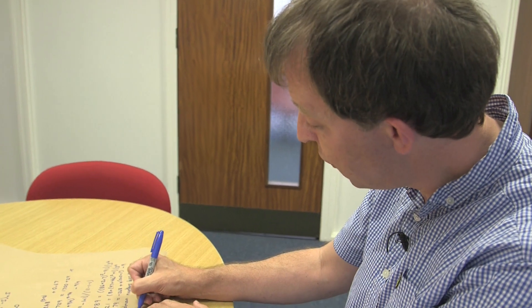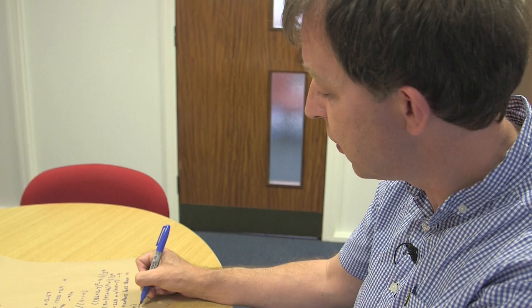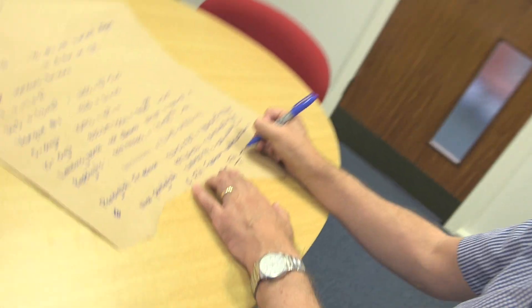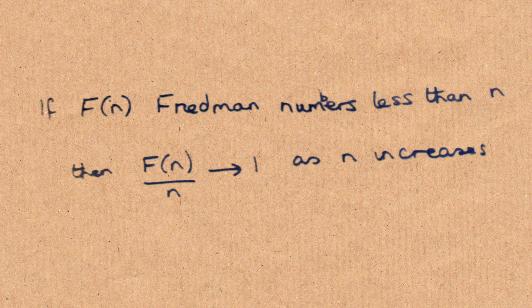It turns out, as the number of digits and the number increases, the likelihood of it being a Friedman number also increases. If there are f of n Friedman numbers less than any given number n, then it turns out, and I don't know the proof of this, that as n increases, the ratio of f of n over n tends to 1. In other words, the likelihood of finding a number tends to unity.